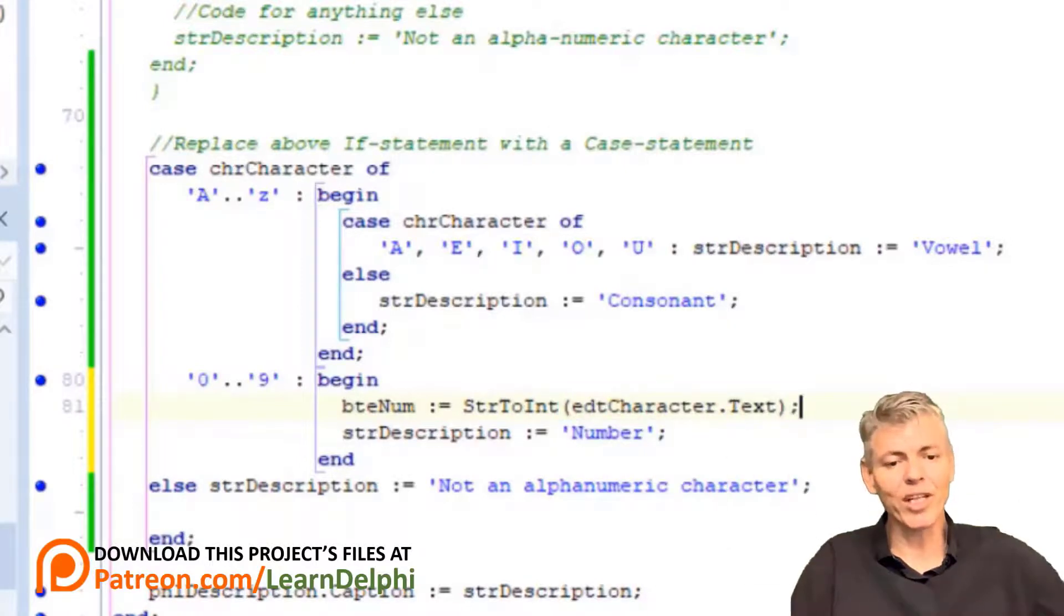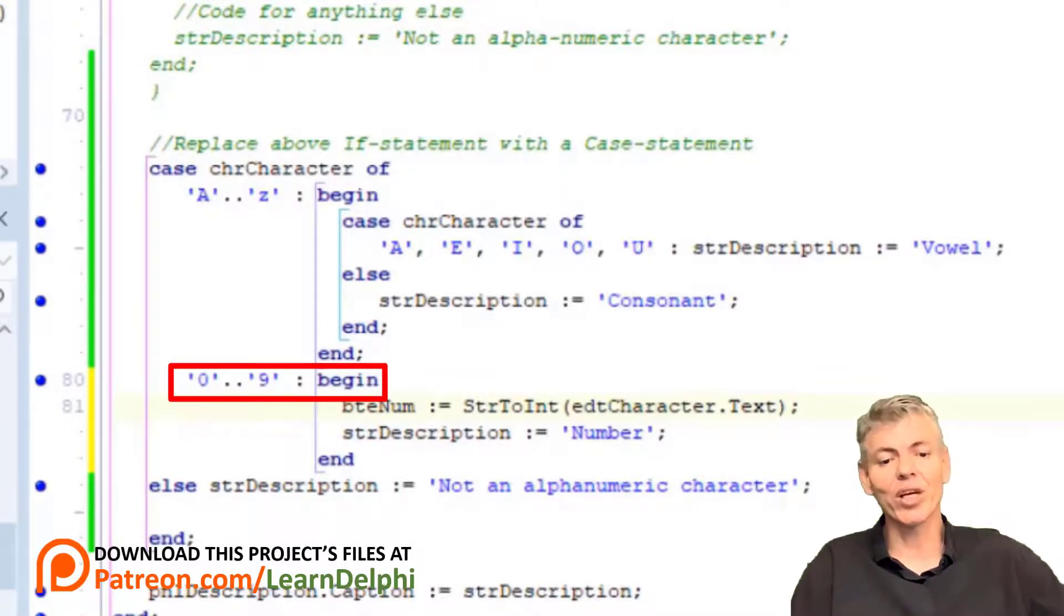Remember, up to this point the number we got from the edit was still a character. So, we use the string to int function to convert the number from a character to a number. Then we assign the result to btenum. Now we can use the number in a mathematical expression. Like I mentioned last time, we first check if it is a number, here with the case option. Only if it is, we convert the character and assign it to the byte variable. If we assign the character before we do the check, we may get an error because it may not be a number.